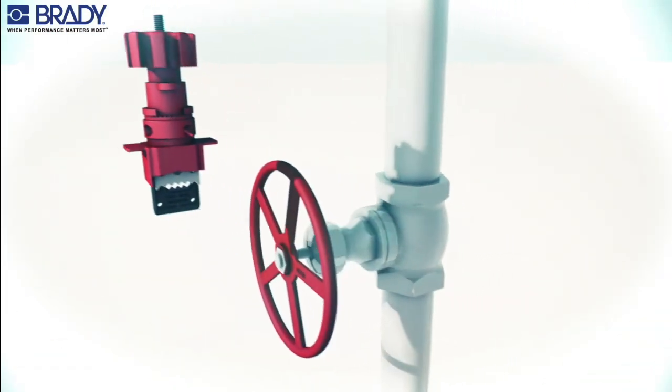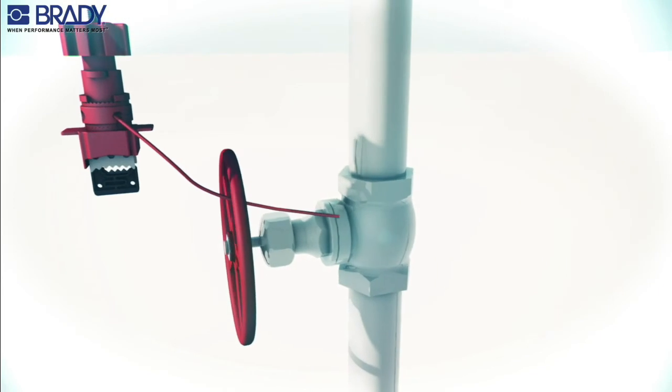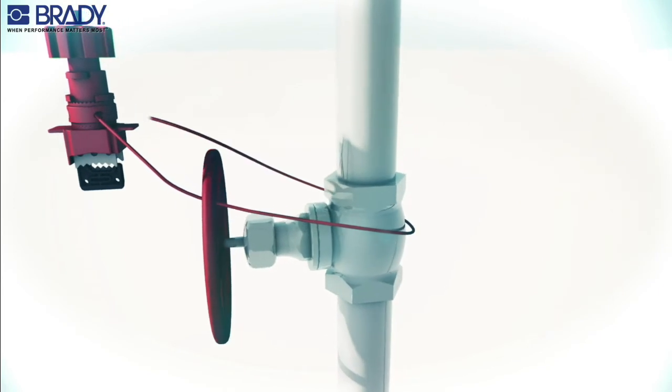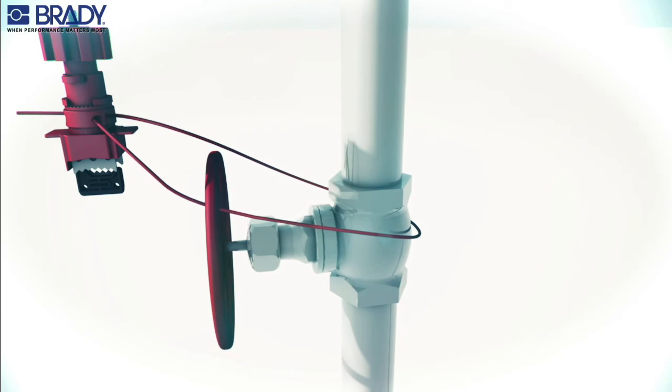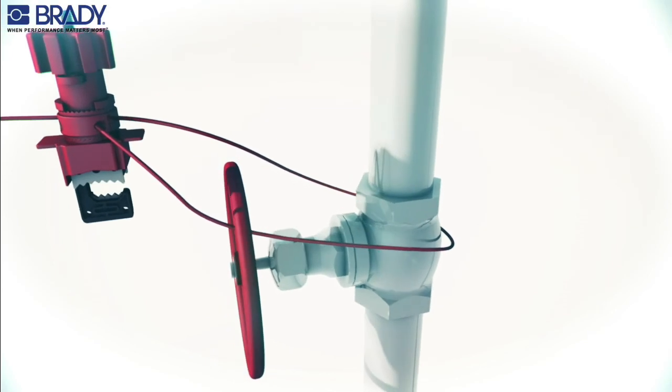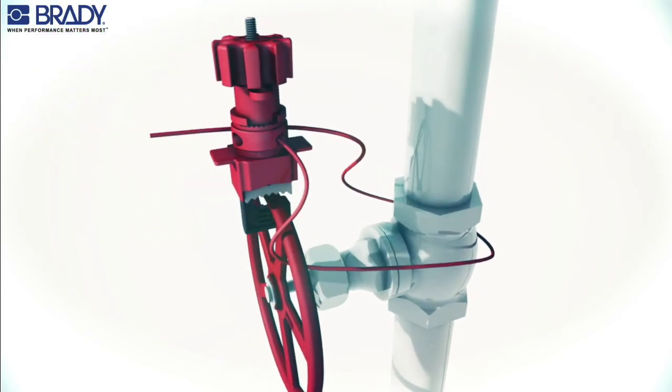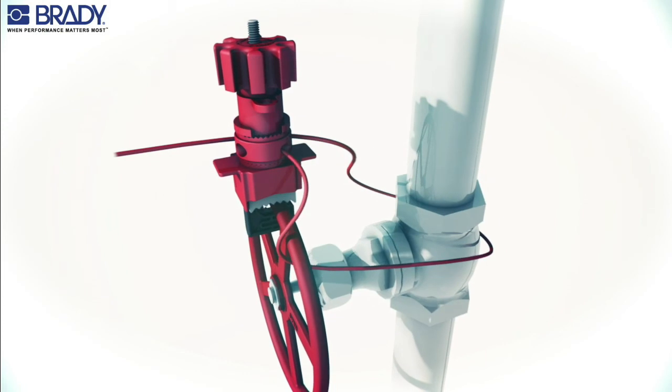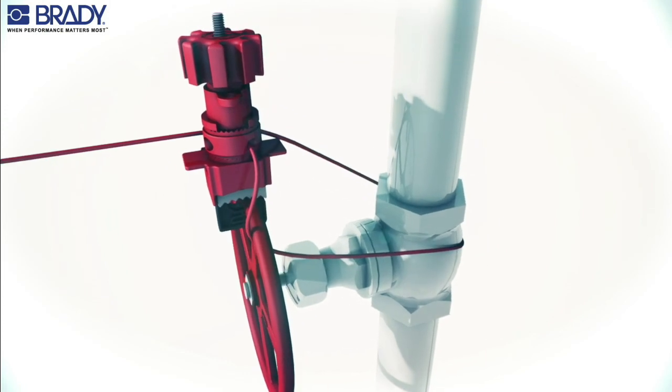To lock out a gate valve in the off position, insert the cable through the cable hole in the universal valve lockout and pull the cable through. Compress the handwheel and slide the clamp onto the valve handle. Pull the cable to remove any slack.